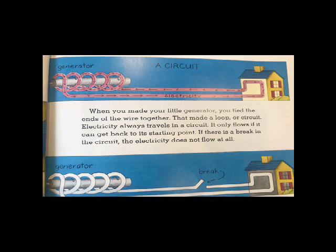When you made your little generator, you tied the ends of the wire together. That made a loop or circuit. Electricity always travels in a circuit. It only flows if it can go back to its starting point. If there is a break in the circuit, electricity does not flow at all.